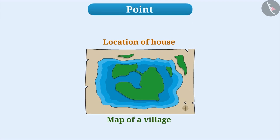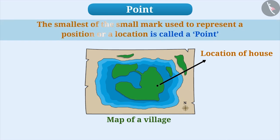First, you will find out the location of your house on the map and you will mark your house with the help of a dot. The smaller the size of the dot, the more exact is your location. The smallest of the small mark used to represent a position or a location is called a point.